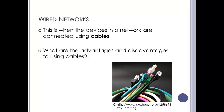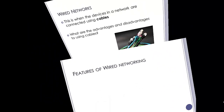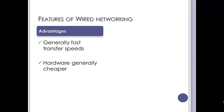Wired networks do have pros and cons. Looking at the plus side first, they have generally quite fast transfer speeds. You can get gigabit ethernet on Cat6 networking cable, which is 1000 megabits per second - that is quite fast. The hardware is also generally cheaper compared to Wi-Fi. A real network cable will cost next to nothing, and a network card is a few pounds. In fact, most machines will obviously have those built in now.